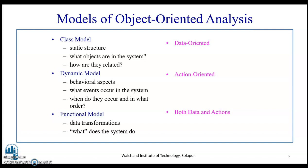Now let us begin with class modeling. The class model is primarily the static structure — it is concerned with what objects are in the system and how they are related. The dynamic model focuses on action-oriented and behavioral aspects: what events occur in the system, when they occur, and in what order. Functional modeling considers both actions and data together through data transformation.